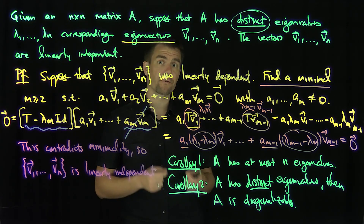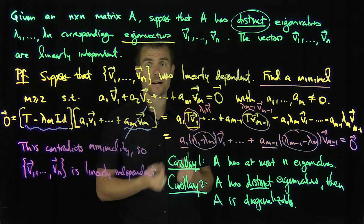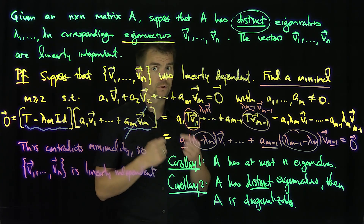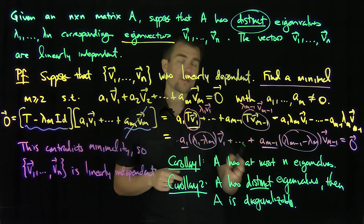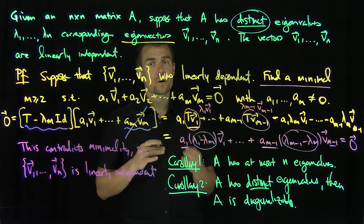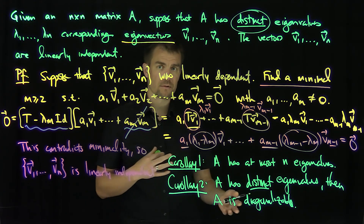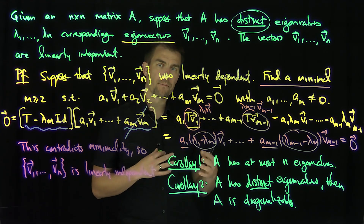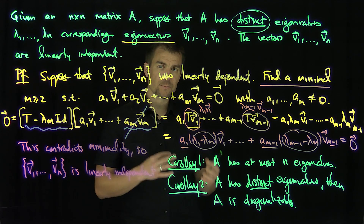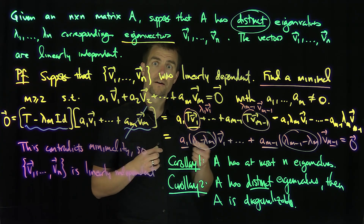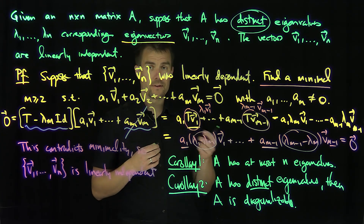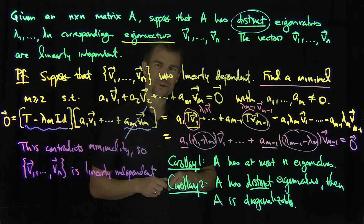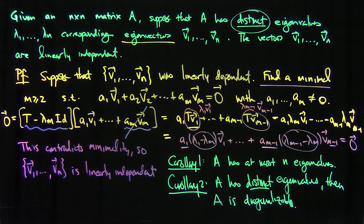In further videos, we'll explore more carefully conditions for simultaneous diagonalizability and commutativity for different matrix structures. We'll also later see that when you don't have distinct eigenvalues, you can look at the Jordan canonical form, which gives an analog of diagonalizability. The important takeaway is that distinct eigenvalues guarantee diagonalizability. Thank you very much.